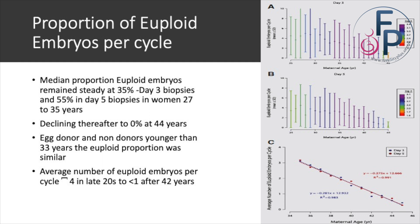Looking at the proportion of euploid embryos per cycle: the median proportion of euploid embryos remained steady at around 35% for day three embryos and 55% for day five embryos in women between 27 and 35, after which a decline started, and by age 44 it is almost zero percent. The average number of euploid embryos per cycle was approximately four for women in their late 20s, dropping to less than one after the age of 42. Clearly, as a woman gets older, the chances of retrieving a genetically normal embryo are significantly lower.